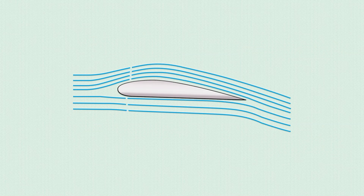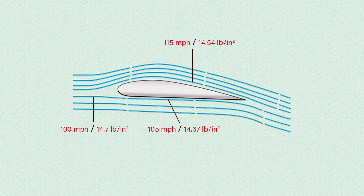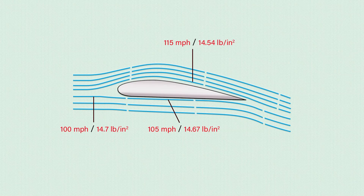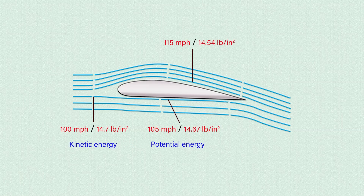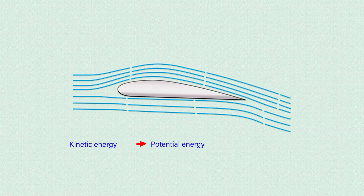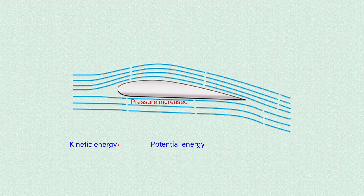As air passes below the airfoil, it is deflected downward and its velocity is slightly decreased. By slowing, the energy in the air converts from velocity energy into pressure energy, and so there is a slight increase in pressure below the surface, with the maximum increase just behind the leading edge.